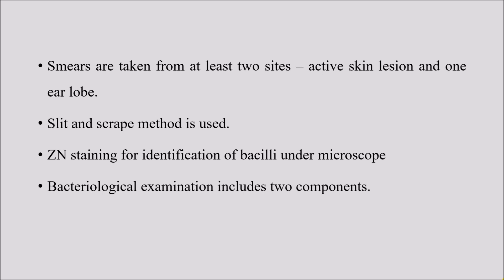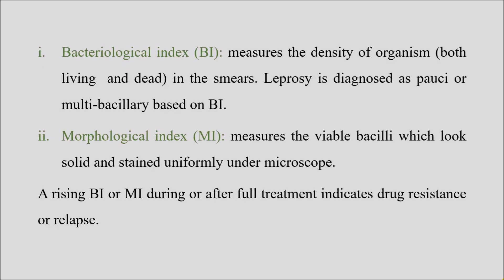Smears are taken from at least two sites: one from the active skin lesion and another from the earlobe. The method used is the slit and scrape method. Ziehl-Neelsen staining is used for identification of bacilli under the microscope. Bacteriological examination includes two components: the bacteriological index and the morphological index. The bacteriological index measures the density of organisms — both living and dead — in the smear, and leprosy is classified as paucibacillary or multi-bacillary based on this index. The morphological index measures viable bacilli that look solid and stained uniformly under the microscope.